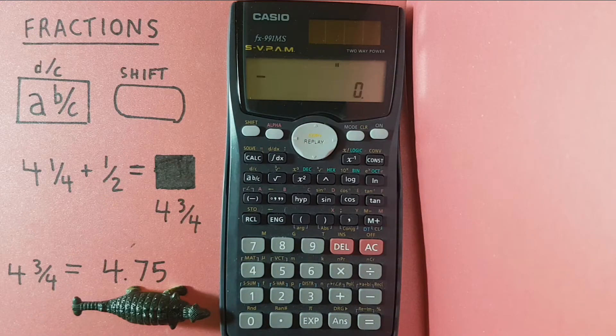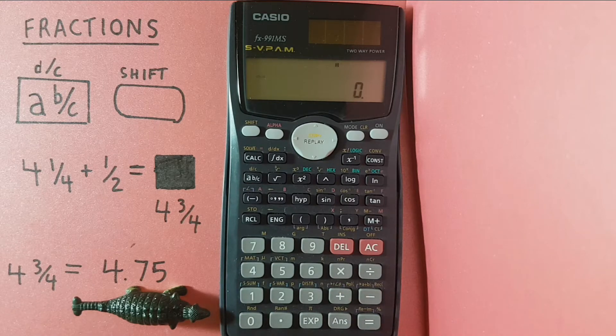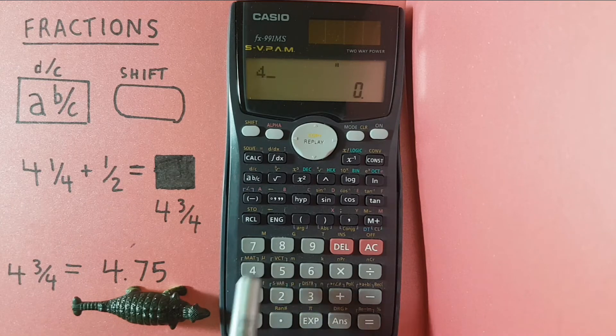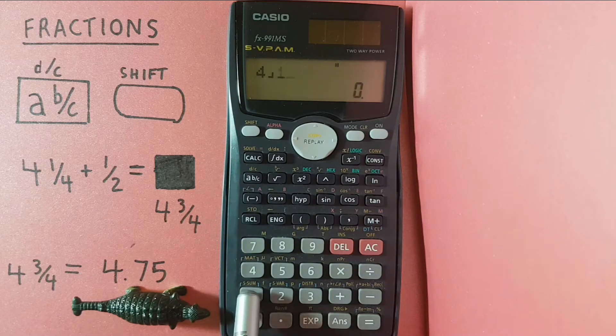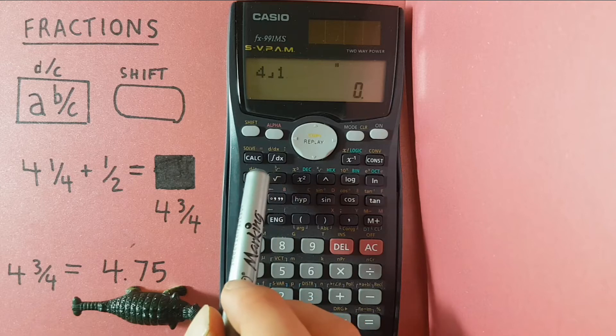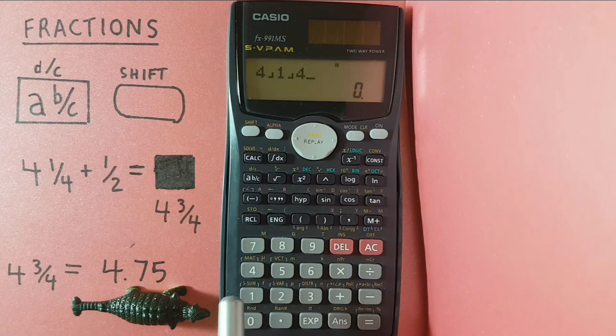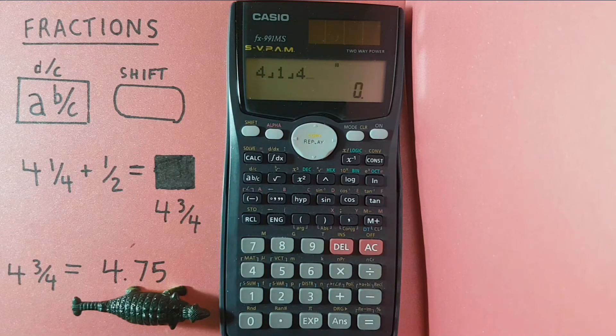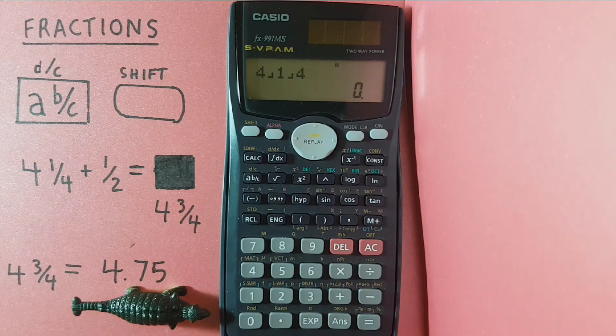To start, we can turn something into a fraction by entering it. We can create 4 and 1 quarter by going 4, then the A B over C key, 1, A B over C, 4. These small marks mean that it is now a fraction, so this represents 4 and 1 quarter.